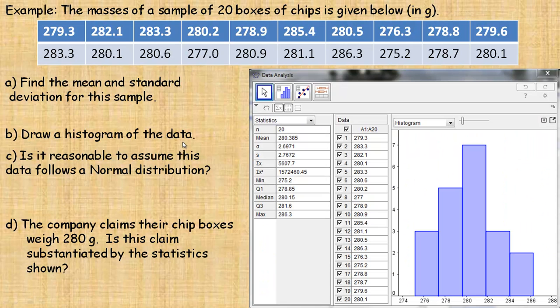So on to a few examples. The masses of a sample of 20 boxes of chips is given below in grams. And so here's all the masses, and we're supposed to find the mean and standard deviation for this sample. And so I used the GeoGebra application.